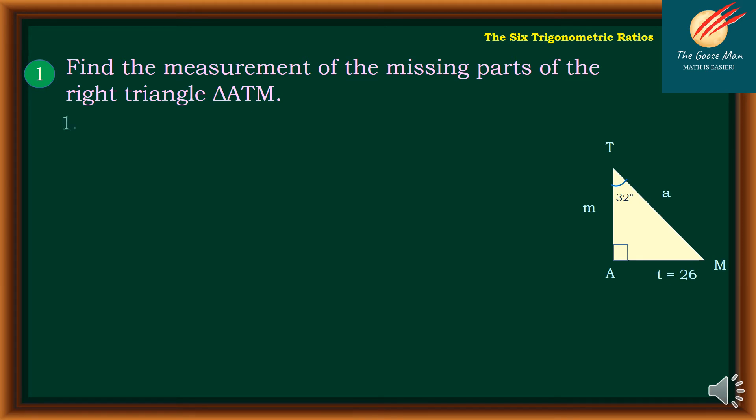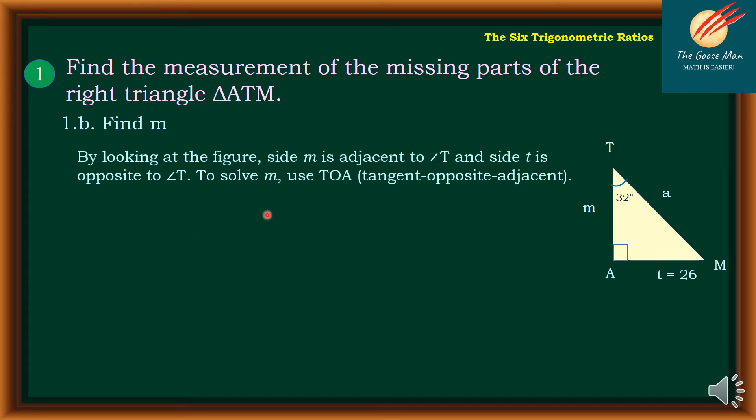Let's move on to the next exercise. This time, let's find side M, or that is the side TA. By looking at the figure, side M is adjacent to angle T, and side T is opposite to angle T. To solve M, use TOA, that is tangent opposite adjacent.